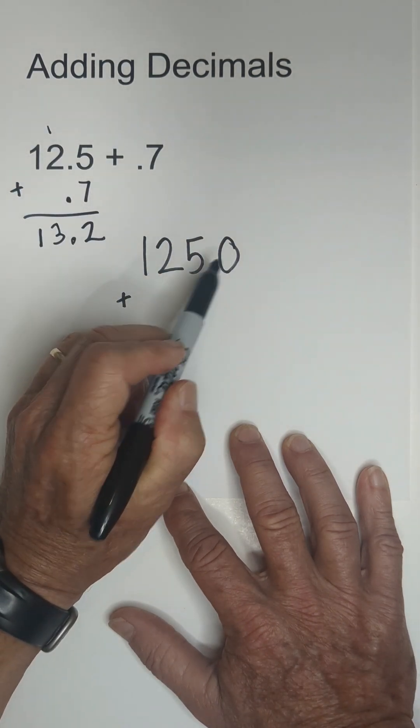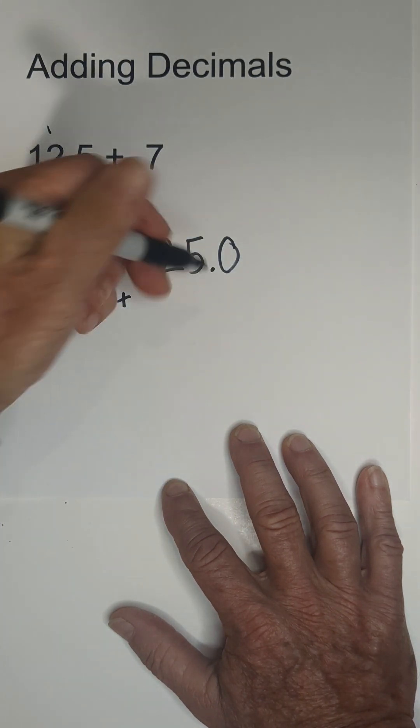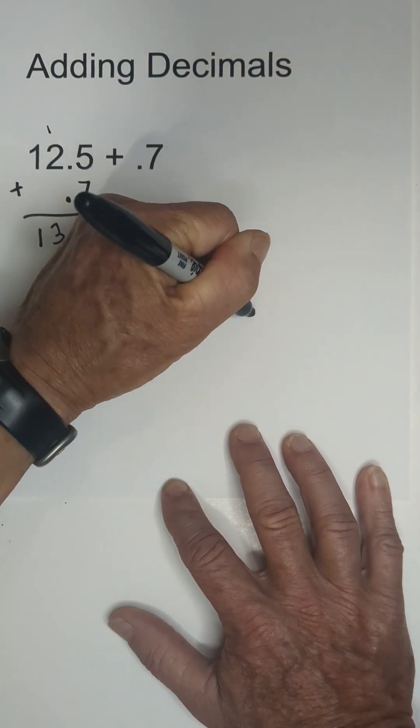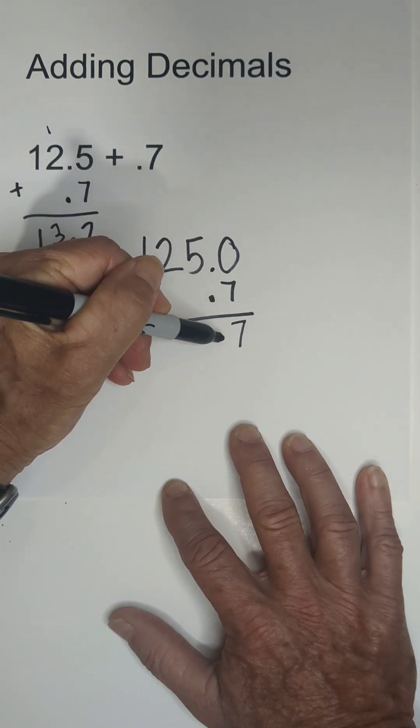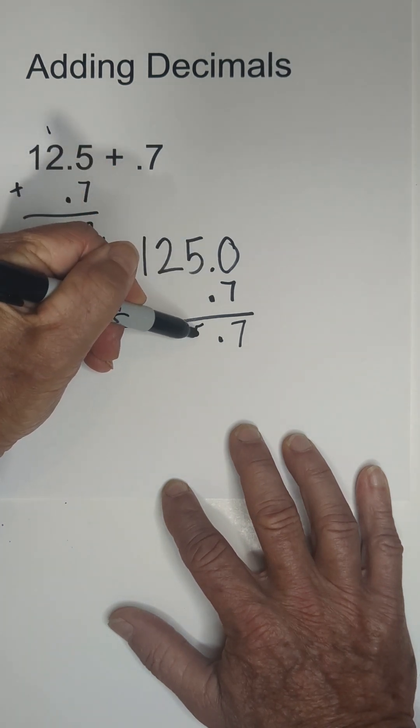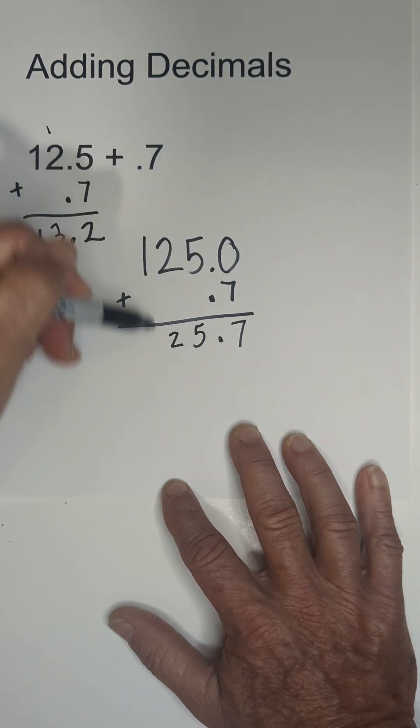Any number, any zero to the right of the decimal does not add value. So we're going to line up the decimals. Now just add 7 plus 0 is 7. Bring down the decimal. Bring down the 5. Bring down the 2. Bring down the 1.